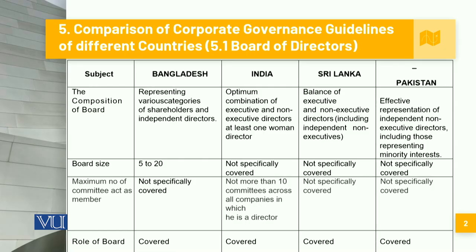If we look at the board size, Bangladesh specifies a minimum of five and a maximum of 20, while for India, Sri Lanka and Pakistan, it's not specifically covered. Looking at the maximum number of committees in which a member can be a part, it is not specifically mentioned in Bangladesh, Pakistan, or Sri Lanka. However, in India, not more than 10 committees across all companies in which he or she is a director. So there we see that there is a limitation of 10 committees.